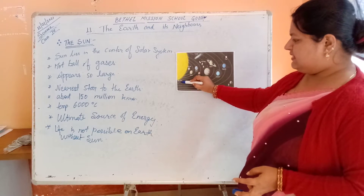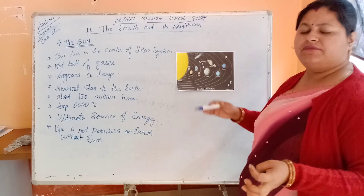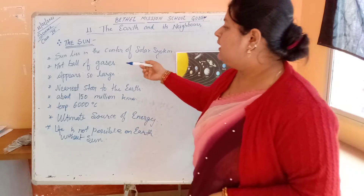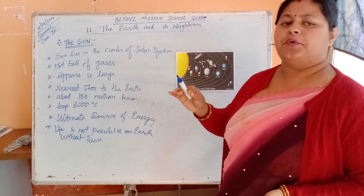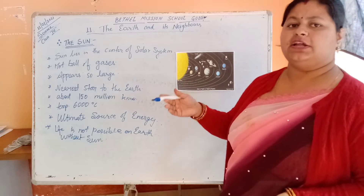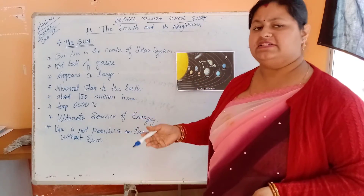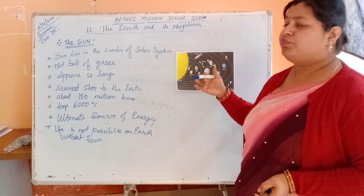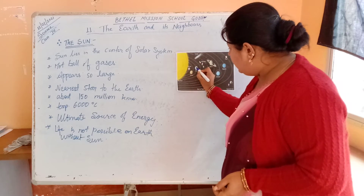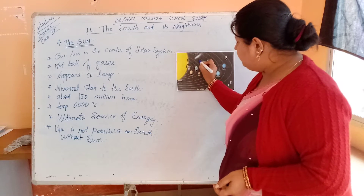You can see the sun here, lying at the center of the solar system. Now we will learn about the earth and its structure. Sun is a hot ball of gases and it lies in the center of our solar system. The distance between the earth and the sun is about 150 million kilometers.